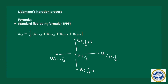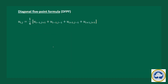This is called the standard five-point formula. Now let us see the diagonal five-point formula. Here, u(i,j) is again the average of four values — (1/4) times the sum of four terms — but here the values of u are chosen diagonally in all four directions.